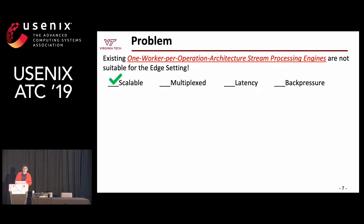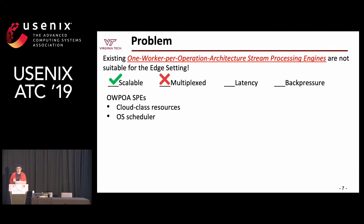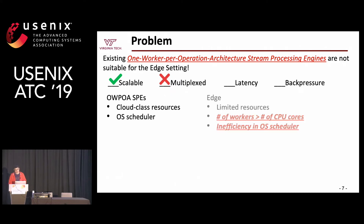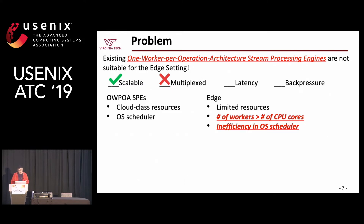The problem is that existing one-worker-per-operation stream processing engines are not suitable for the edge setting. They were built for the cloud, assuming cloud-class resources, and rely on the OS scheduler. At the edge we have limited resources, so the number of workers may be much larger than the number of CPU cores. This leads to inefficiency in the OS scheduler, making multiplex challenging and potentially triggering unnecessary back pressure.